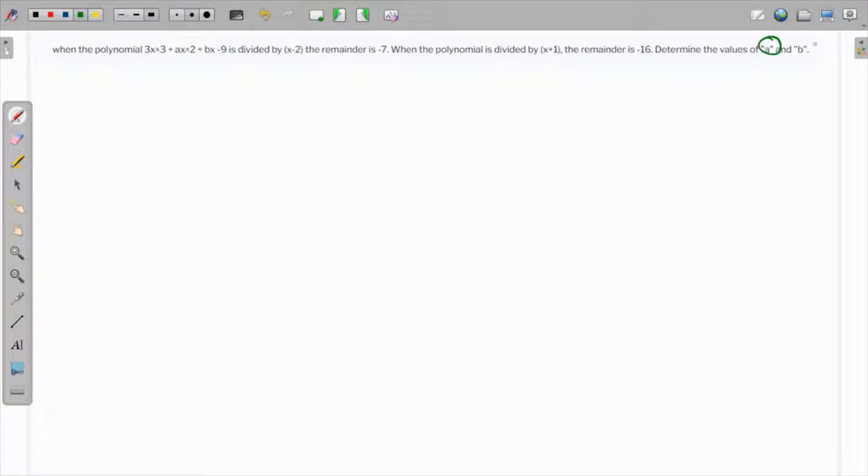Whenever a polynomial is divided by another polynomial, we can use the remainder theorem. x minus 2 is the divisor, so if we equate x minus 2 to 0, we get the value of the root.